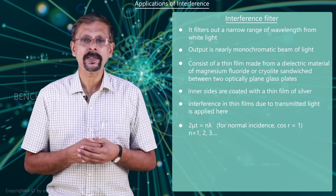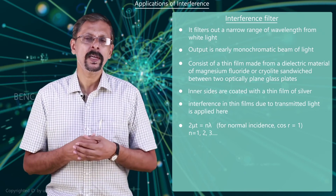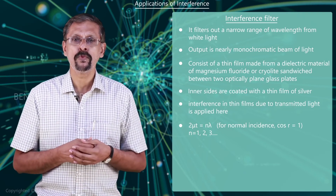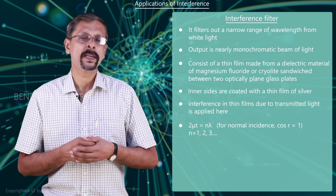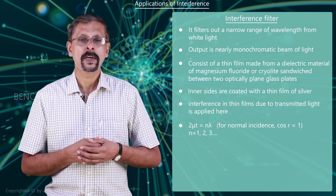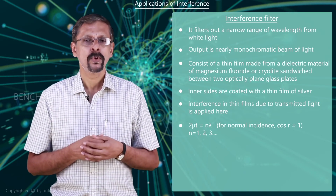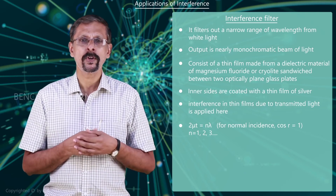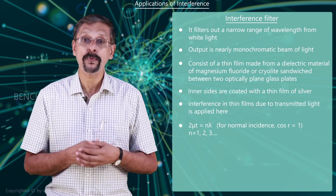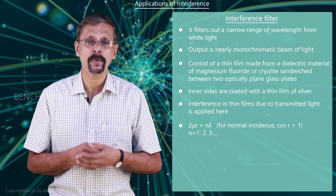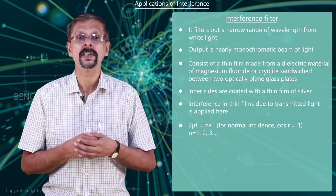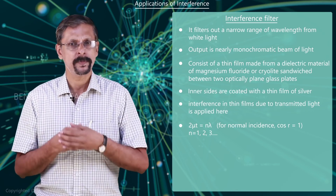For an optical thickness μt equal to 550 nanometers, the transmitted wavelengths for n = 1, 2, and 3 are 1100 nm, 550 nm, and 367 nm respectively. Only 550 nm, which is the wavelength corresponding to green, is in the visible region.